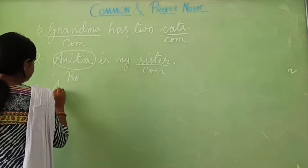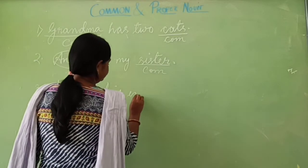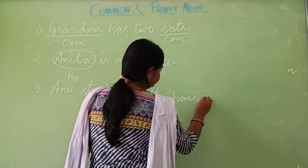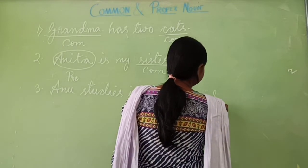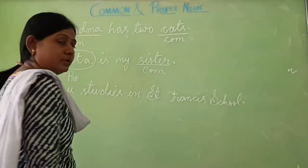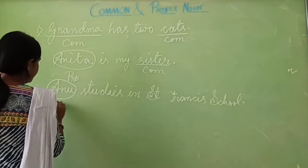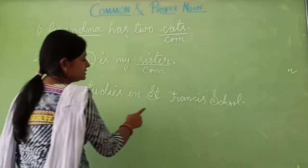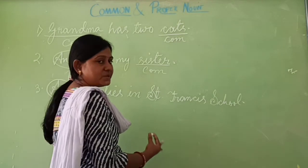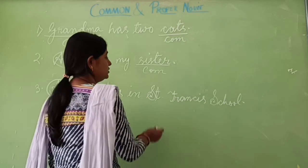Next sentence: Anu studies in St. Francis school. Anu is the special name of a person, so it is a proper noun. St. Francis school — all schools are not St. Francis school, so it is a special name of a school and therefore a proper noun. A very easy way to identify a proper noun is that it starts with capital letters. Circle it and write PRO.